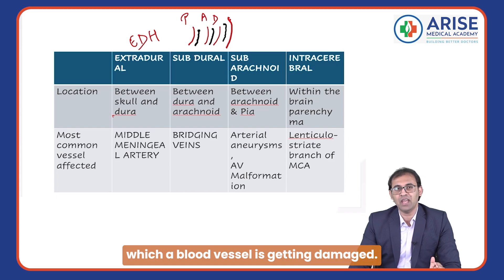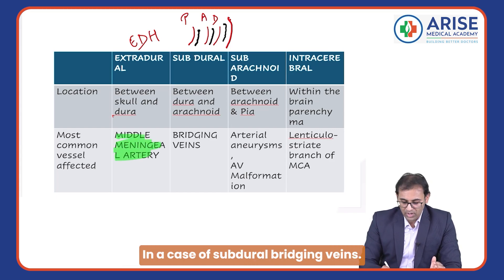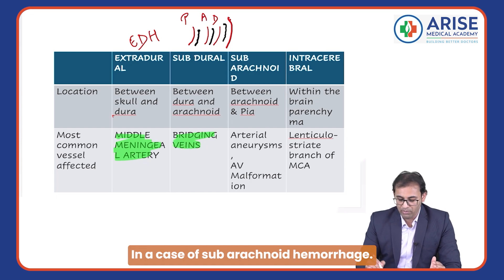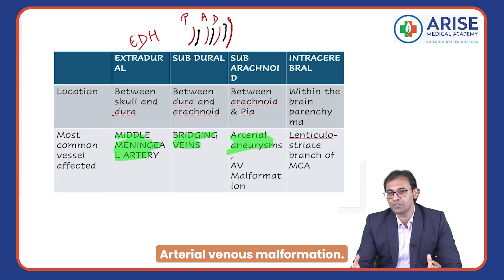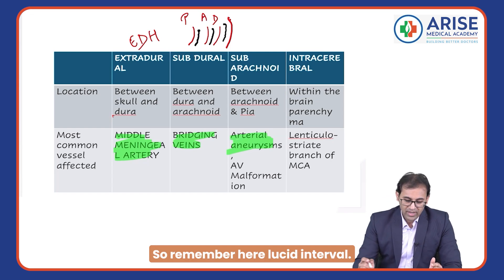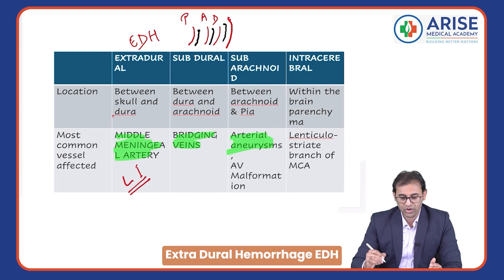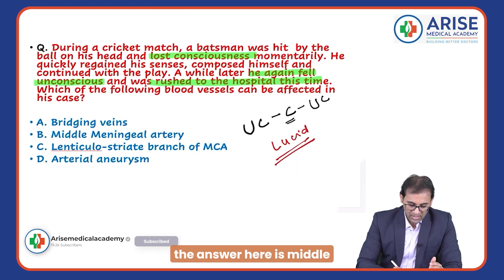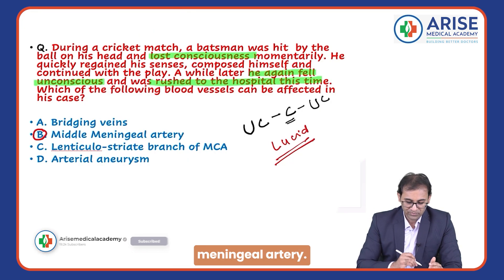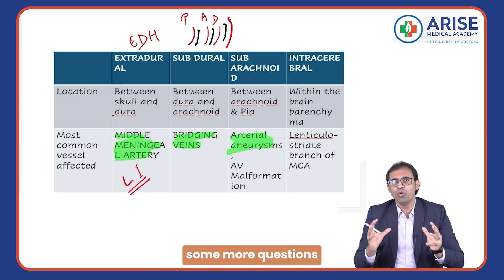In EDH, the blood vessel getting damaged is the middle meningeal artery. In a case of subdural hemorrhage, it is the bridging veins. In subarachnoid hemorrhage, it is an arterial aneurysm or arteriovenous malformation. So remember: lucid interval is seen in extra dural hemorrhage, and the answer is the middle meningeal artery.